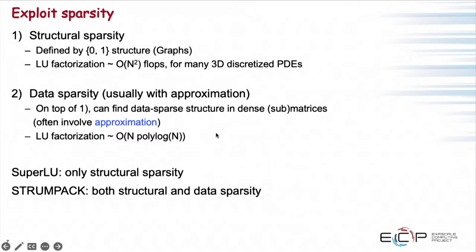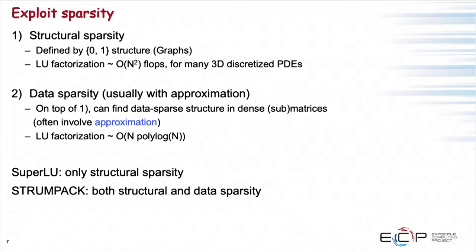This approximate factorization can most widely be used as a preconditioner, and in this way you can reduce complexity from n squared to order n with a polylog n factor — like n log n squared or similar. With this complexity people say it's nearly linear time, which is very good for sparse direct solvers.